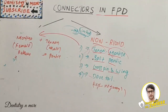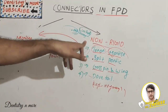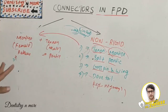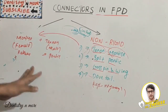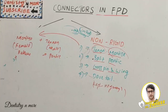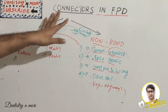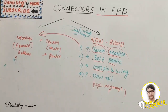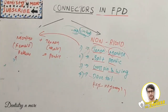To summarize, connectors in FPD are classified into rigid connectors, where movement of components is not permitted, and non-rigid connectors, where movement is permitted. This topic is commonly asked as a short note or short essay in university papers. More topics in prosthodontics will be covered in upcoming sessions.